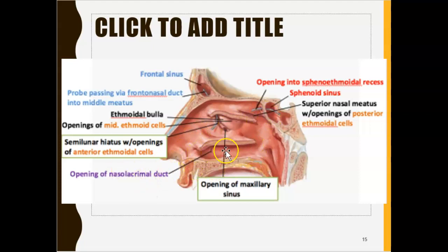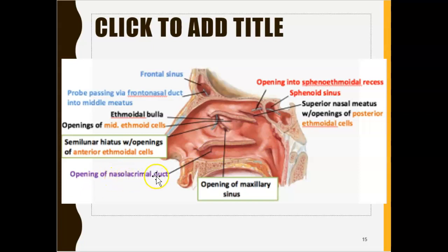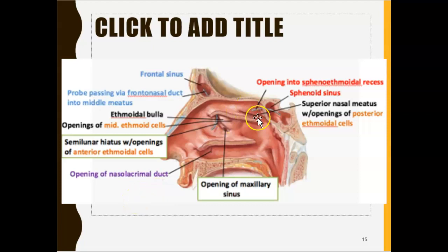The last one is the inferior nasal meatus. The opening in the inferior nasal meatus is that of the nasolacrimal duct — the tear duct. So when you cry and have a buildup of tears or mucus, that drains out through the inferior meatus.